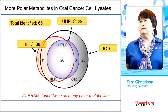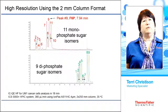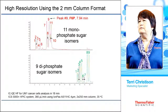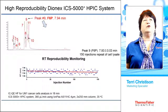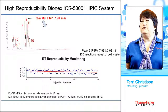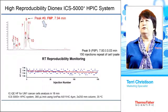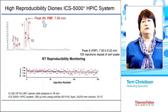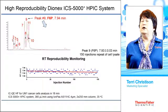We also developed the method on a 2 millimeter format and verified that we still have the same great resolution for these difficult phosphate sugars — we were able to get 11 monophosphate sugars and 9 diphosphate sugars. We also wanted to look for a really robust method, so we took peak 9 and monitored it through retention time over 150 injections, finding great reproducibility. We want to propose this method for metabolomic researchers because of its robustness, since metabolomic researchers may be doing thousands and thousands of samples to find that needle in the haystack.